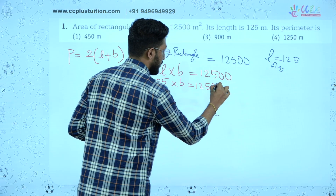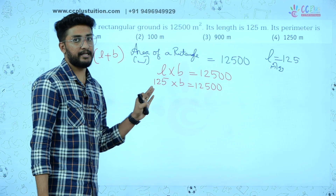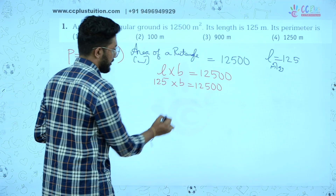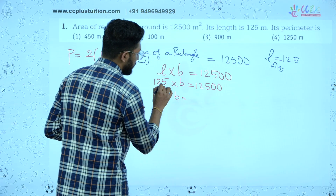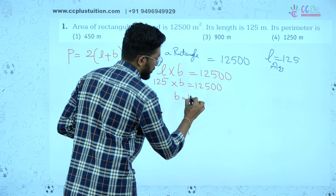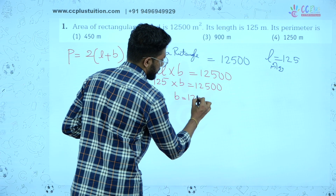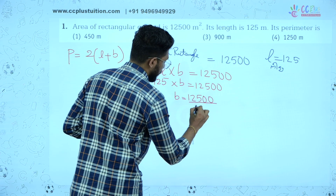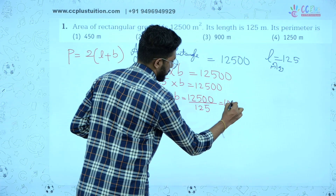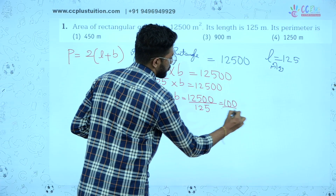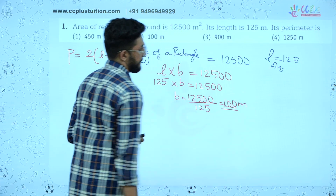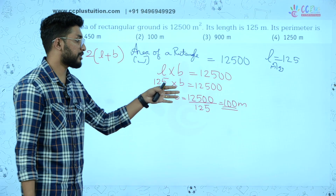If you have studied at application level, you can see it directly. B equals 12,500 divided by 125. Cancelling gives us 100. The breadth is 100 meters.